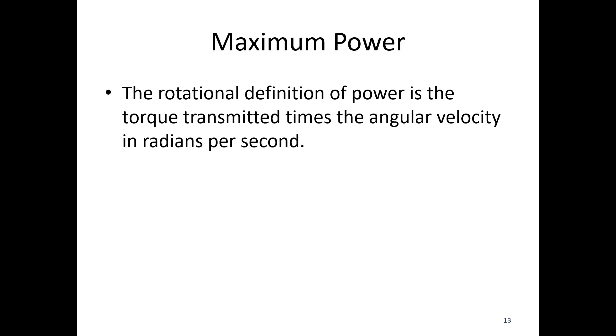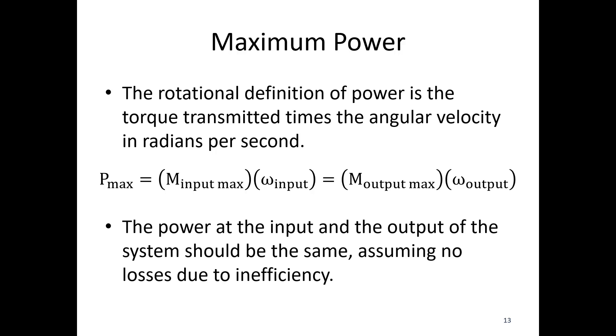The last part is power. The rotational definition of power is the torque transmitted times the angular velocity in radians per second. We find that the power is what unites these two pieces. The maximum input torque times the omega input is the same as the output. There's a maximum power we can set up for any pulley-driven system. If you've got a hundred horsepower motor, you'd need a certain setup no matter what the input and output pulleys are.